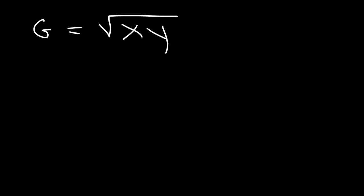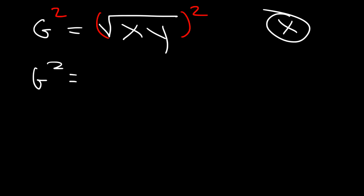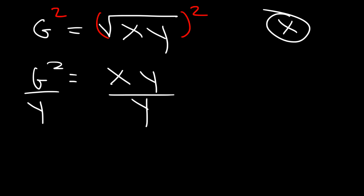The geometric mean of two numbers x and y is the square root of the product x times y. Let's solve for x. To get rid of the square root, take the square of both sides: g squared equals x times y. Then divide both sides by y, so x equals g squared divided by y. And that's it.